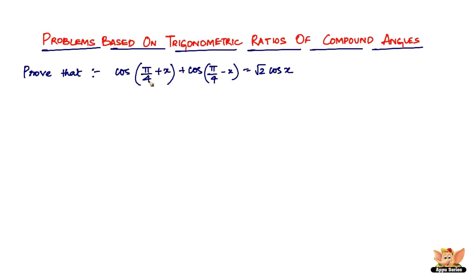So now, if you look into this a little closely, you can see that this is the form cos of a plus b plus cos of a minus b, right? So you just have to use those formulas and go from there and see what happens.